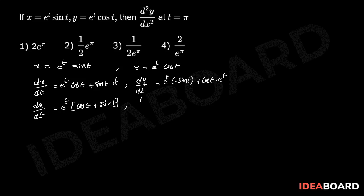dy/dt equals e power t times (cos t minus sin t), applying the product rule: derivative of cos t is minus sin t, plus cos t times e power t.